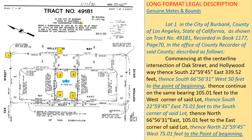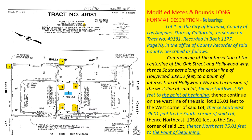The third one is the modified metes and bounds description. It is the same as the genuine long format description except without bearings. Occasionally, this format is needed.